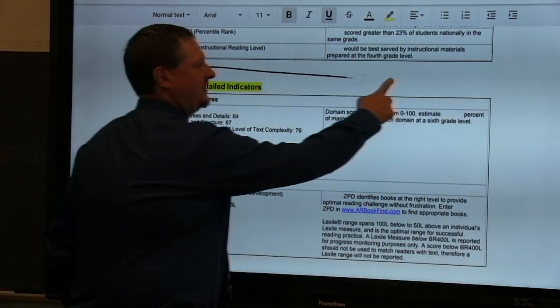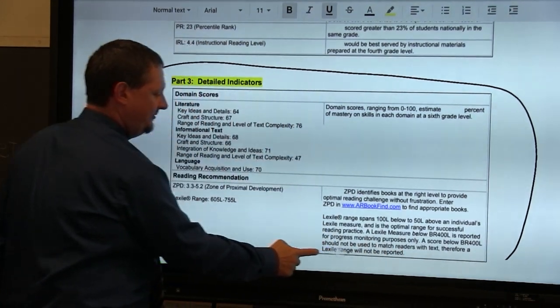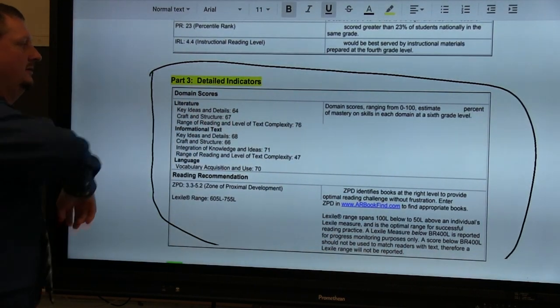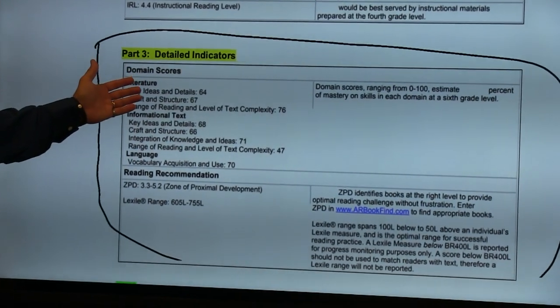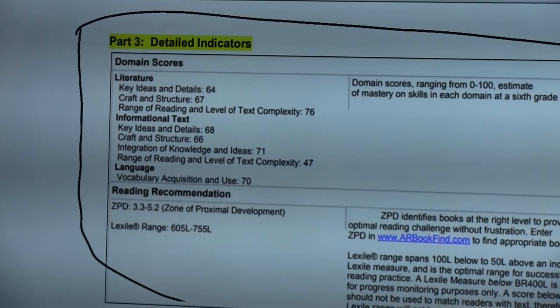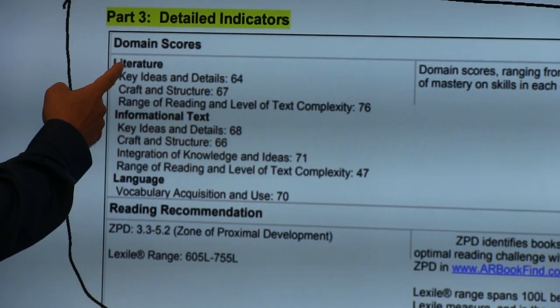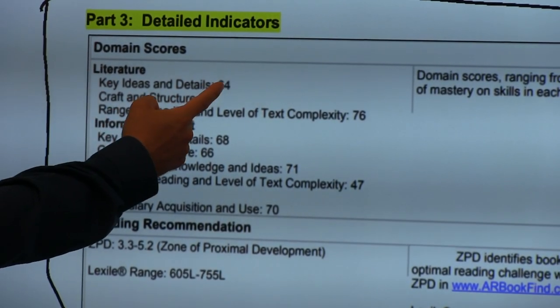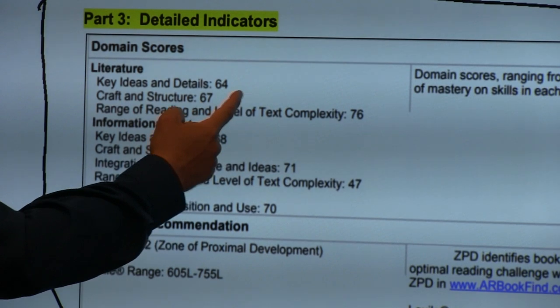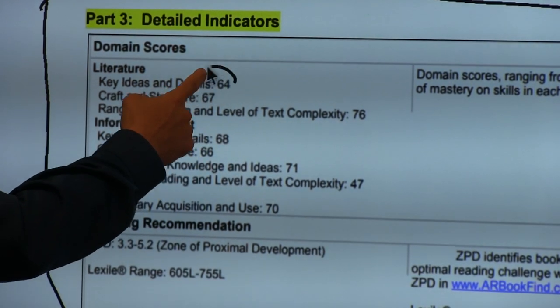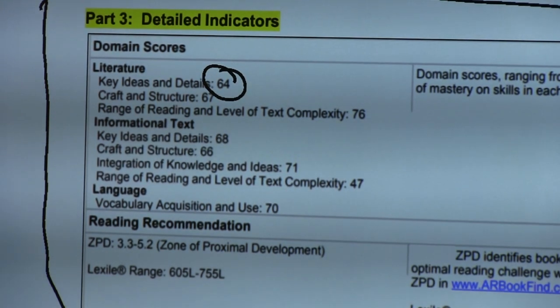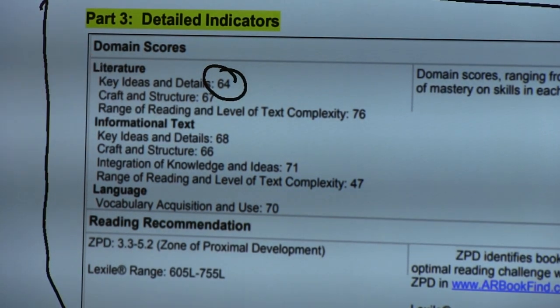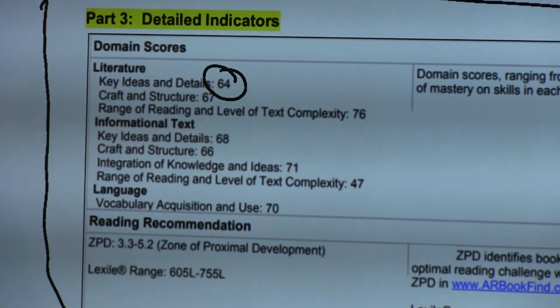This is the third section of a STAR reading report that I want to draw attention to. This gives us a little bit more specific information about sub domains measured on the test. So for example in the literature category we can see different sub category scores. Here we can see that 64 is the lowest sub category for literature for this particular student. That means within the literature category their weakest area is key ideas and details.